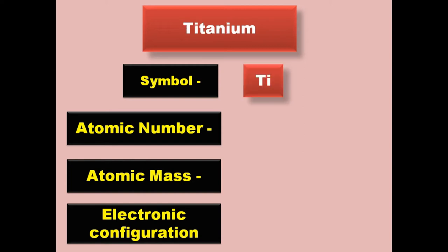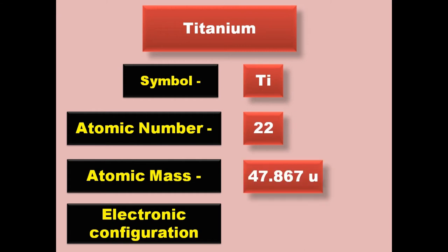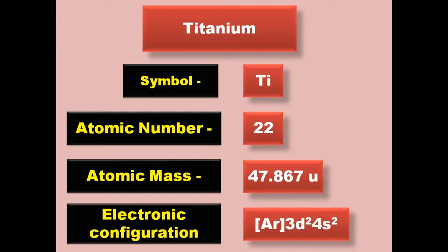Titanium has symbol Ti, atomic number 22, atomic mass 47.867, electronic configuration [Ar] 3d2 4s2. Titanium is a transition metal and exists in solid form at room temperature.